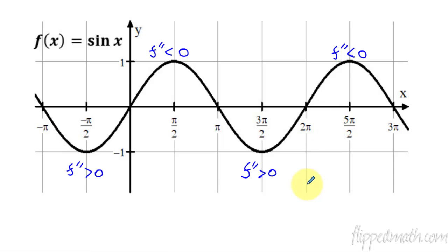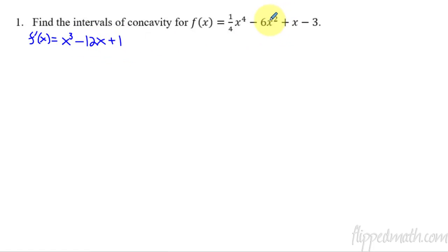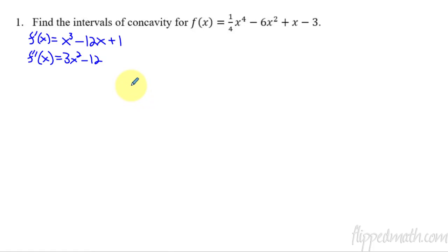So what if we don't have a graph and all we have is the function? We're going to take the second derivative. First we need the first derivative — write small here. The first derivative is going to equal four x cubed minus 12x plus one. And now we need the second derivative, because what we're trying to do is figure out if the second derivative is positive or negative. So the second derivative is 12x squared minus 12.